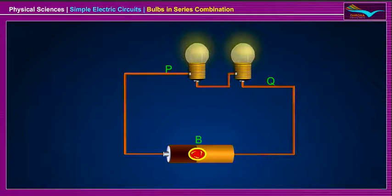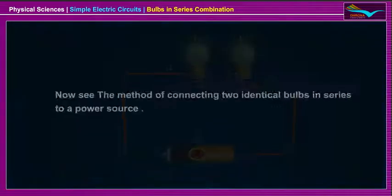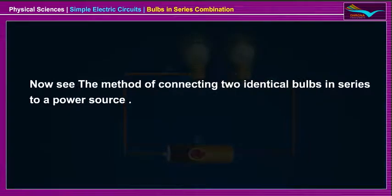Bulbs in Series Combination. Two identical bulbs L1 and L2 are connected side by side with a source of battery B. Now see the method of connecting two identical bulbs in series to a power source.